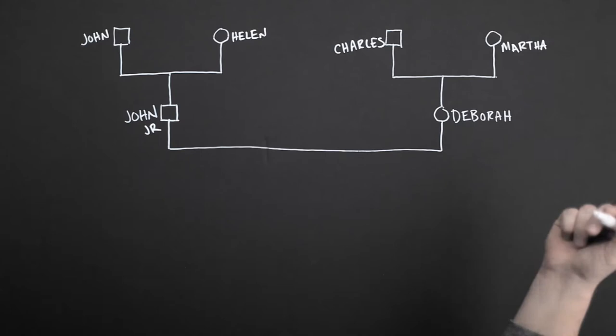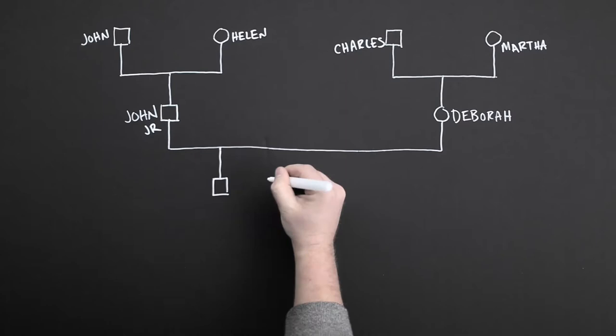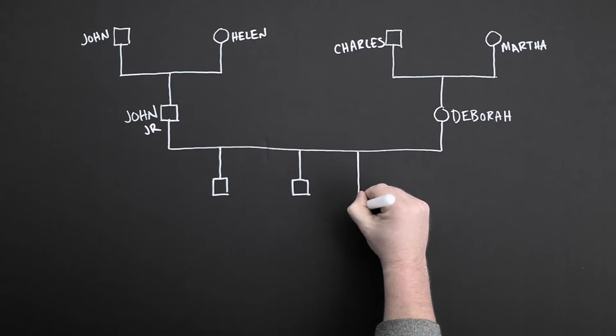Underneath your parents, draw a line down for each of your siblings in your nuclear family. Draw a box for brothers and a circle for sisters. When you get to your name, draw an extra long line because you are the protagonist in your story.